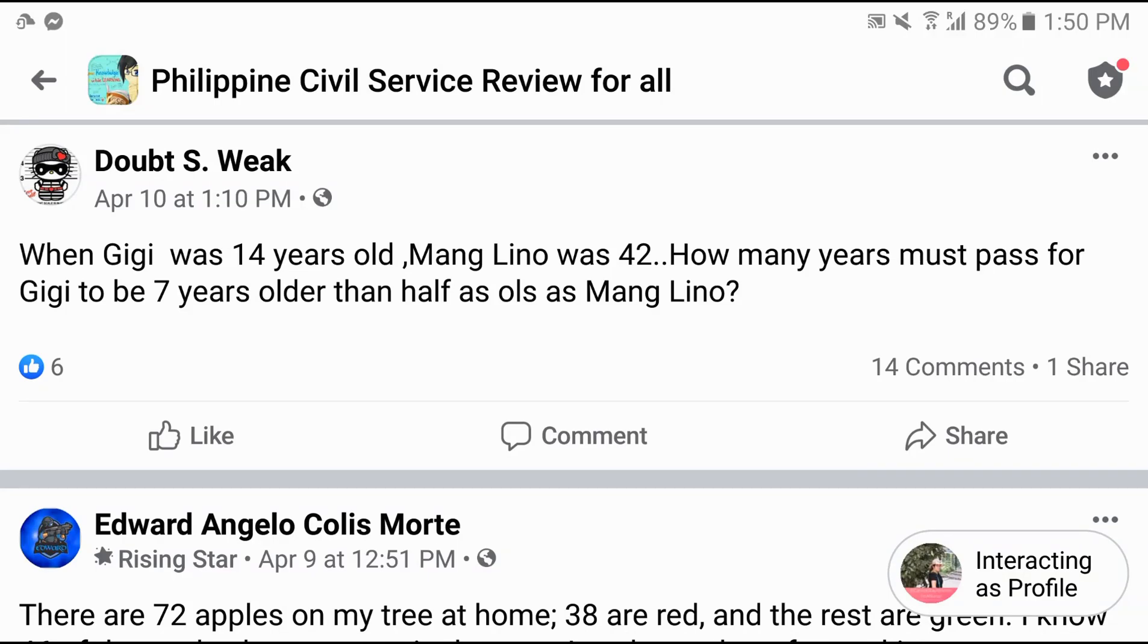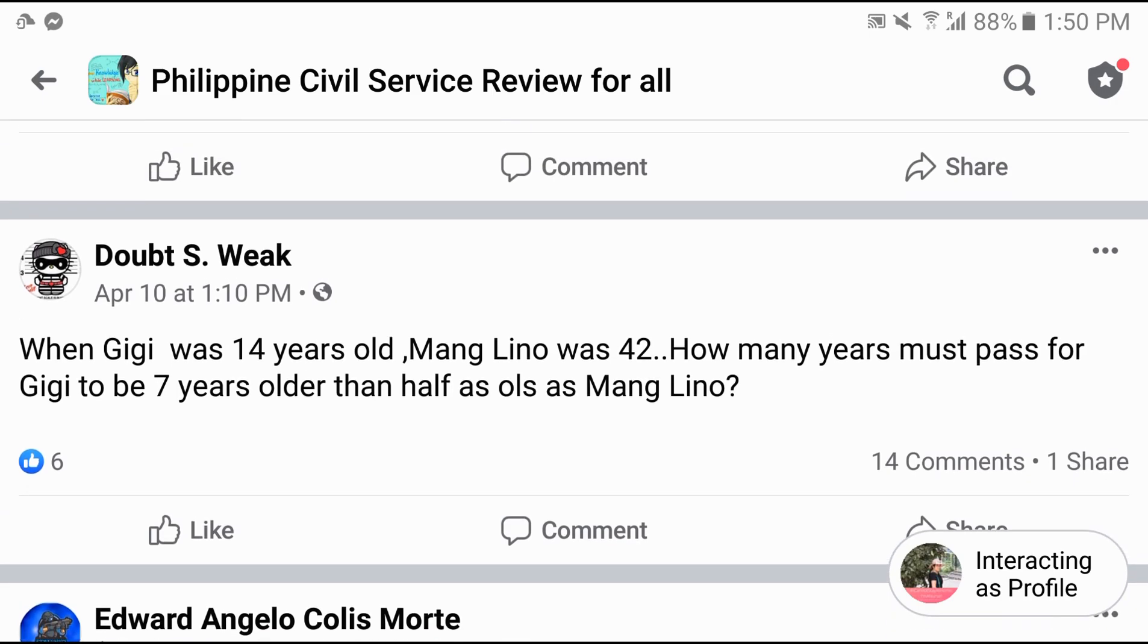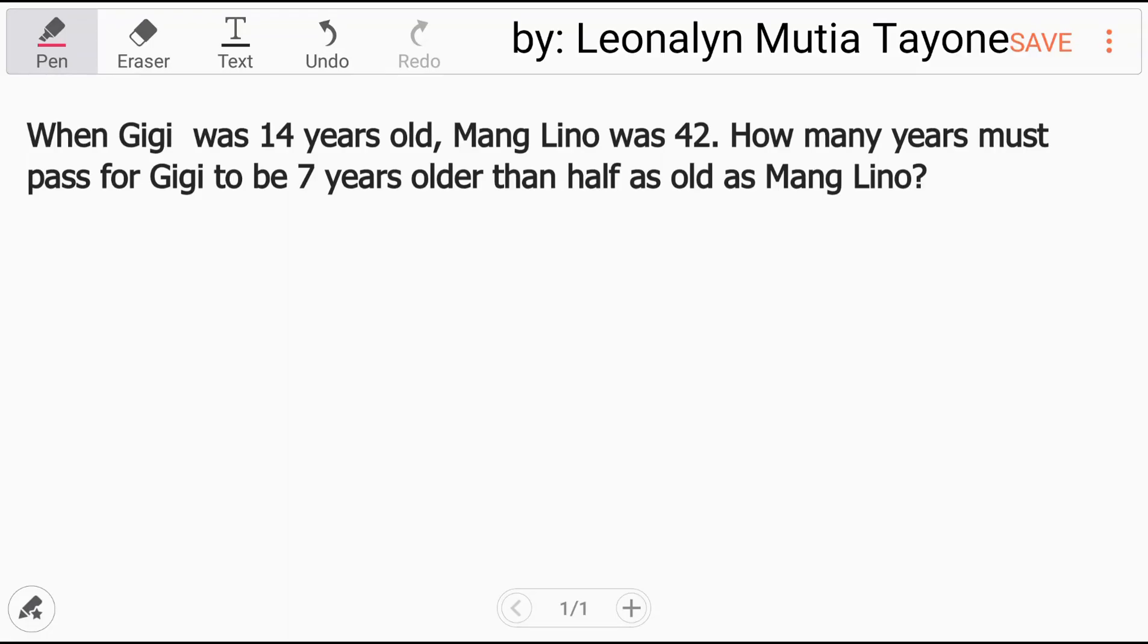Let's do an age problem. When Gigi was 14 years old, Mang Lino was 42. How many years have passed for Gigi to be seven years older than half as old as Mang Lino? If you haven't answered this yet, try to answer this first before you see our solution.